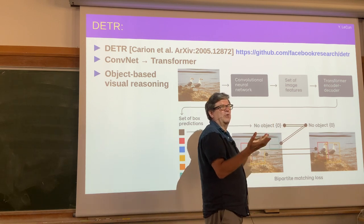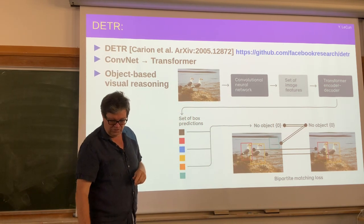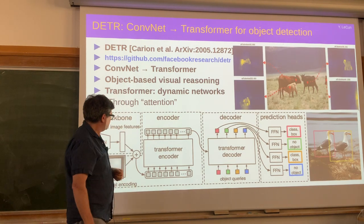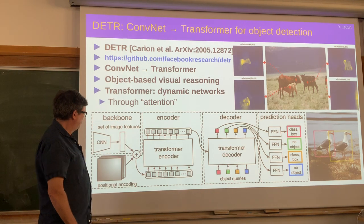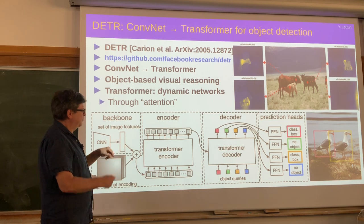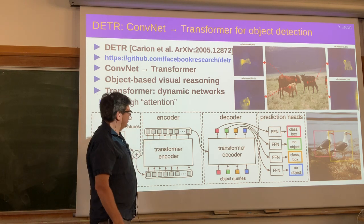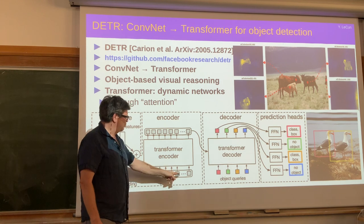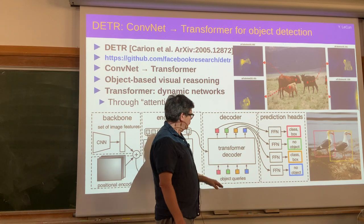This matching is a kind of alignment that can be thought of as relaxation or minimization with respect to a latent variable. The overall architecture is: convolutional net produces an array of feature vectors, positional encoding indicates where each feature is located, you run through the transformer where each feature is a separate token, and you get a set of output tokens.